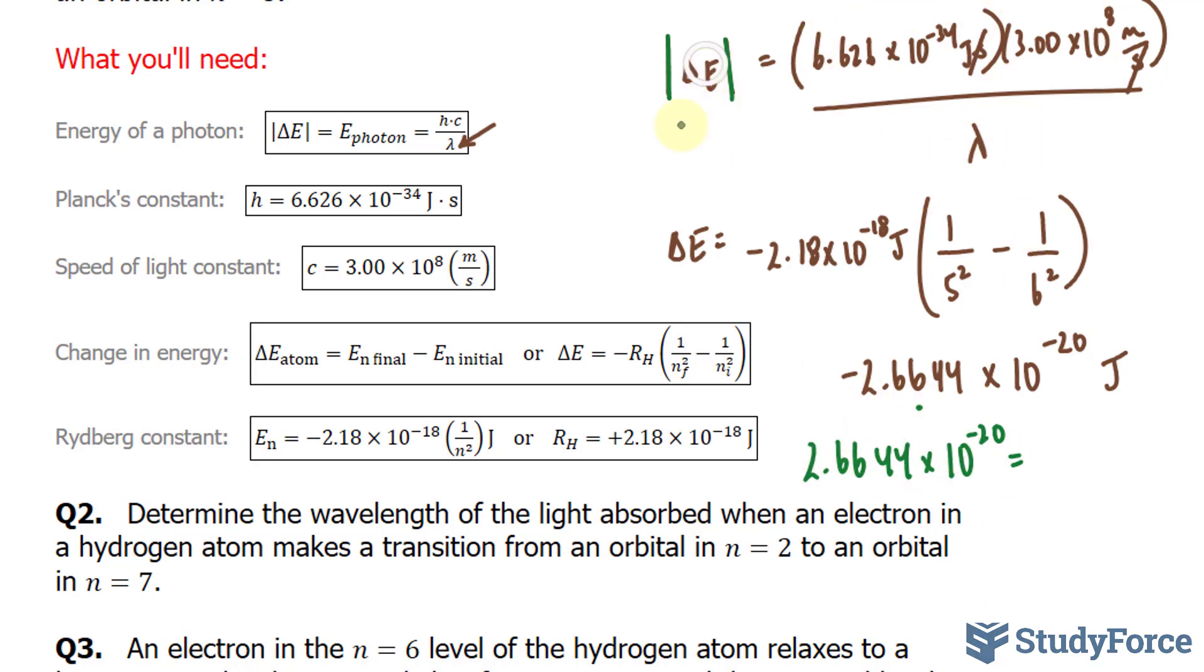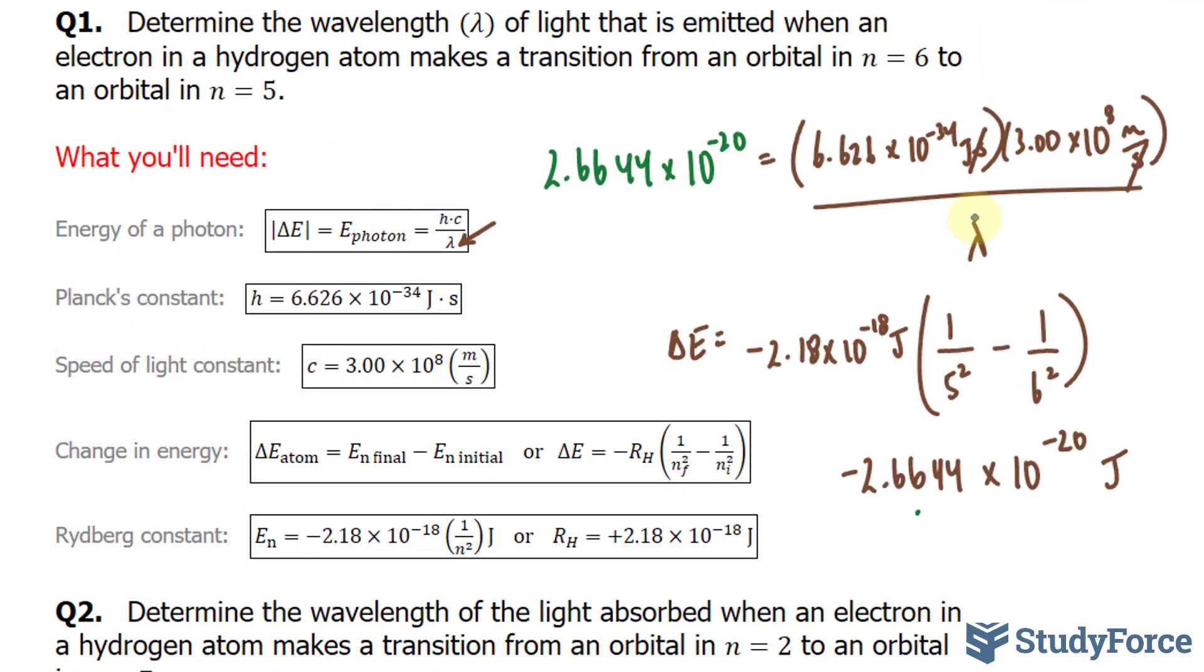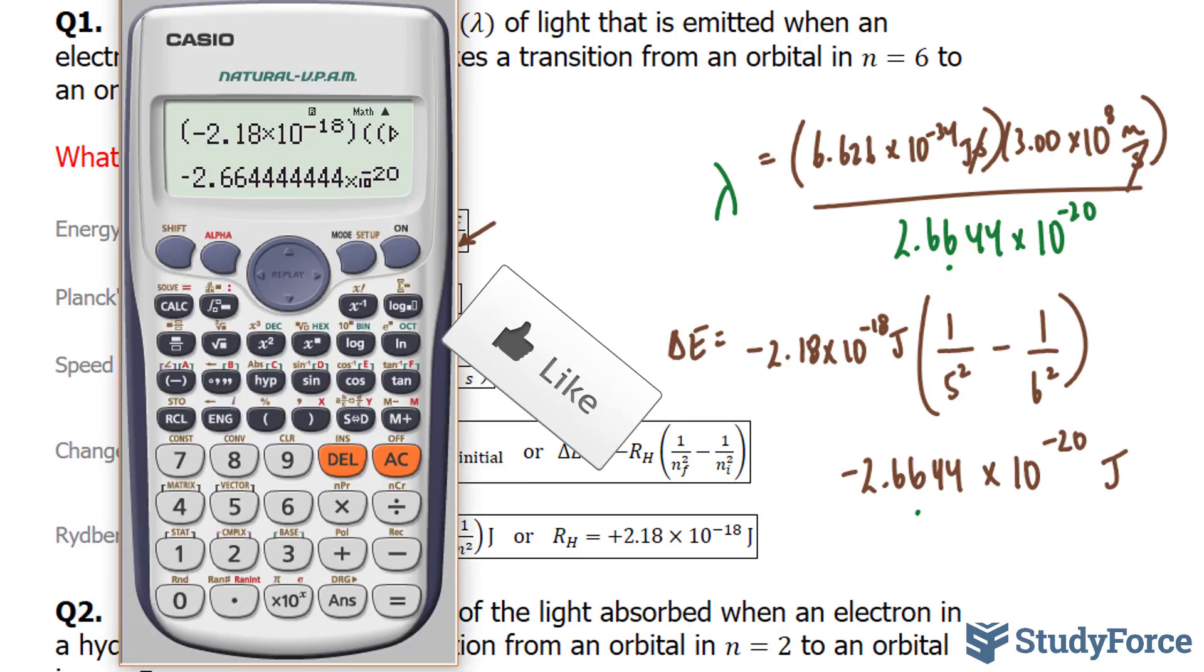So I'll transfer this number here. And now to solve for lambda, I'll multiply both sides by lambda and divide both sides by this number. Our expression should look like this. Now we can go ahead and figure out what the answer is.